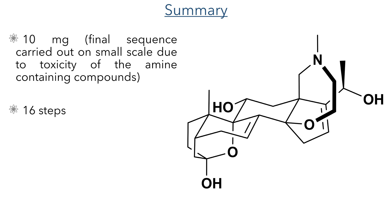Overall the authors produced only 10 mg of this target compound — not due to low-yielding reactions, but because of the extreme toxicity of the aminated intermediates, which forced the researchers to carry out these reactions on a very small scale to minimize safety risks. This highly toxic and challenging compound was produced in just 16 steps, many of which were carried out sequentially in one pot, making this a very efficient and effective synthesis.